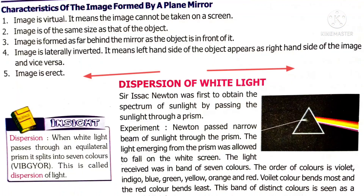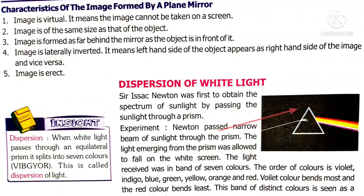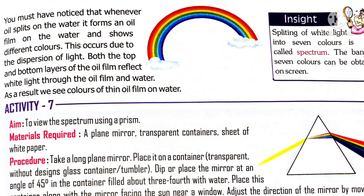Now let's move on to the topic of dispersion. When white light passes through a prism, it splits into 7 different colors called VIBGYOR — this is called dispersion of light. A rainbow is also an example of dispersion, where raindrops act as a prism. When sunlight passes through raindrops, you can see the 7 colors of the rainbow.